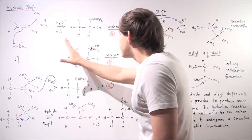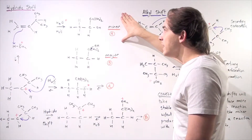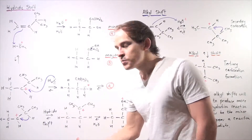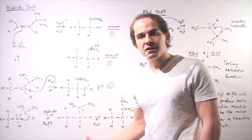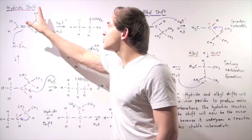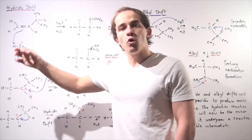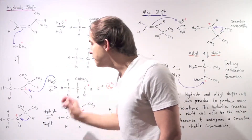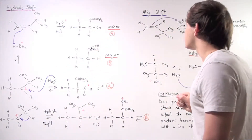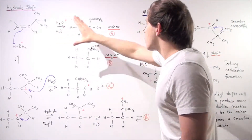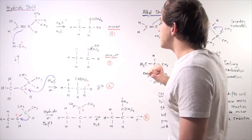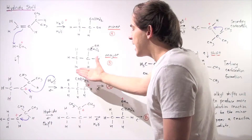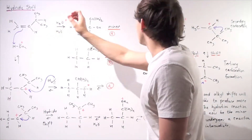Product B is preferred over A because in B, a hydride shift leads to a more stable tertiary carbocation. Anytime hydride shifts are possible and will lead to more stable intermediates, they will take place and compete with the other product. The straightforward hydrolysis without the hydride shift leads to the minor Product A, while the hydration reaction with the hydride rearrangement gives the major Product B.